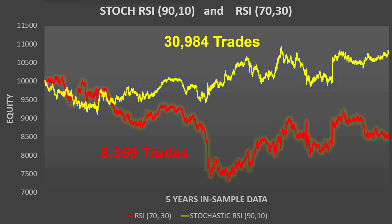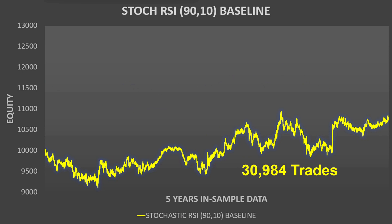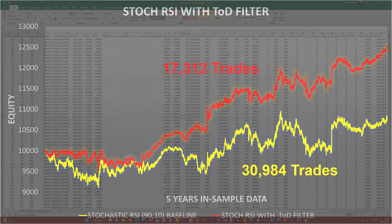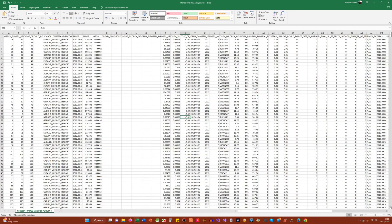We then started to look at time-of-day analysis for the stochastic RSI. With the very simple implementation of a time-of-day filter, we managed to improve the equity curve as you can see in red. Because we're now filtering out trades, the number decreased to just over 17,000, which is still a reasonable number. The way I perform this analysis is to output the metrics for every position that is opened to a CSV file.